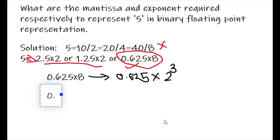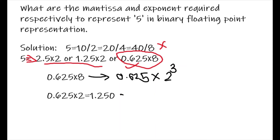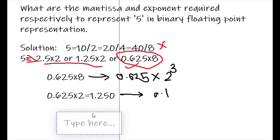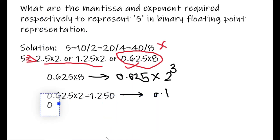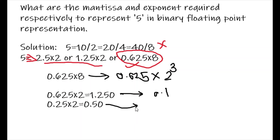Here you can see 0.625. Now multiply it with 2, so it becomes 1.250. The bit before the point is 1, so you write 0.1. Now take only 0.25 and multiply it with 2 again. You get 0.50. There is nothing before the point, so you write 0 — the next bit is 0.